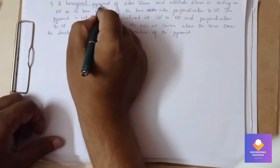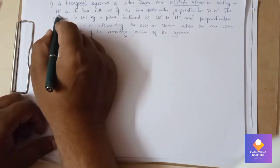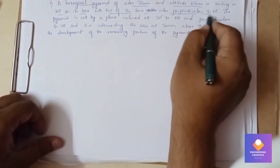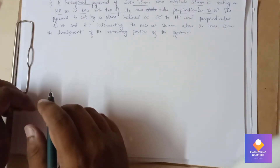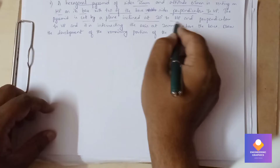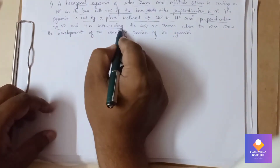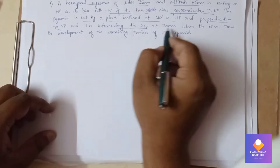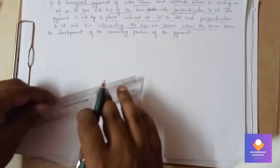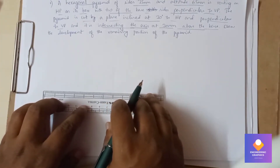Hexagonal pyramid with dimension 35mm and altitude 65mm, resting on HP on its base. Two of the base sides are perpendicular to VP, and the pyramid is cut by a plane inclined at 30 degrees to HP and perpendicular to VP, intersecting the axis at a height of 30mm above the base. We need to draw the development of the remaining portion of the pyramid. First, we need to construct a hexagon.